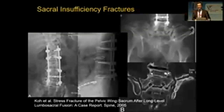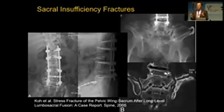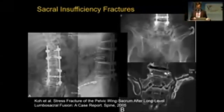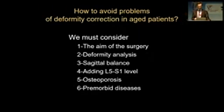If your fixation is very rigid, then the body distributes its loads to other segments and the sacrum may get fractures, or sacroiliac joint problems may happen — even the pelvis may get fractures. These are so-called sacral insufficiency fractures.